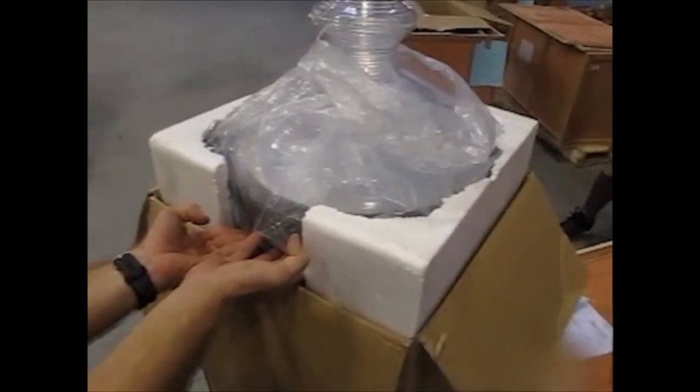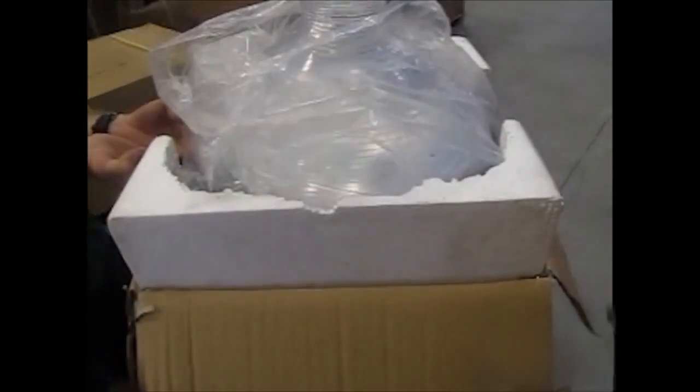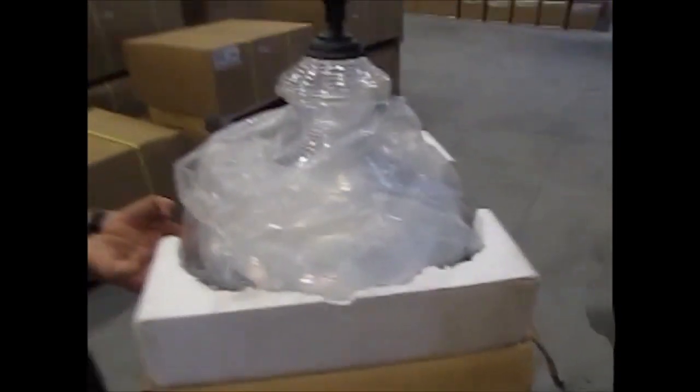styrofoam on both sides of the light fixture. You see that's set down, and the best way to do it is to pull it out of the cardboard or the wooden crate. And then Frank, if you would step in...